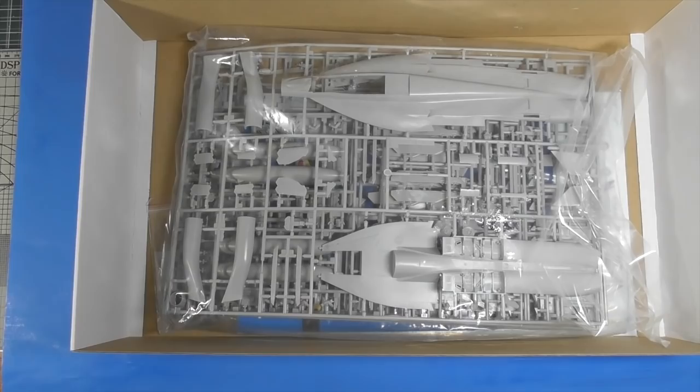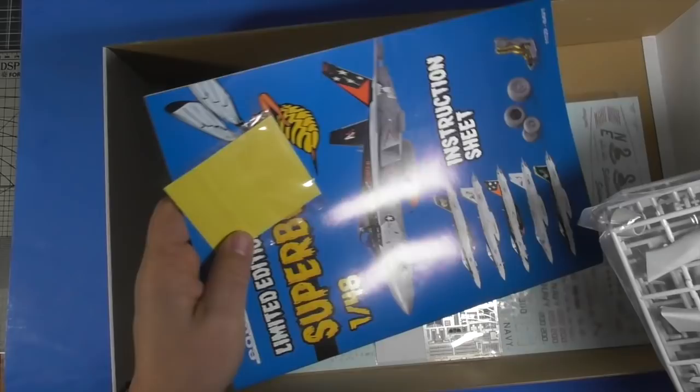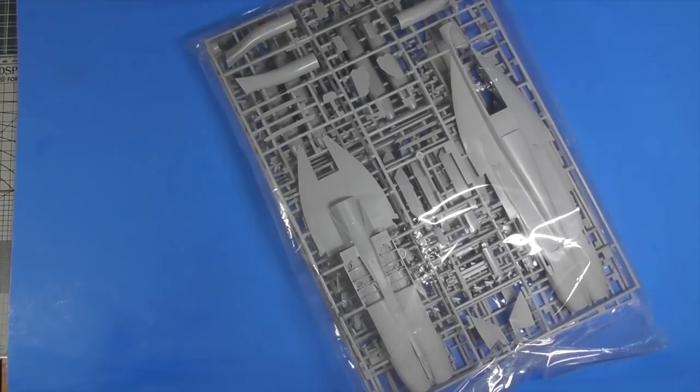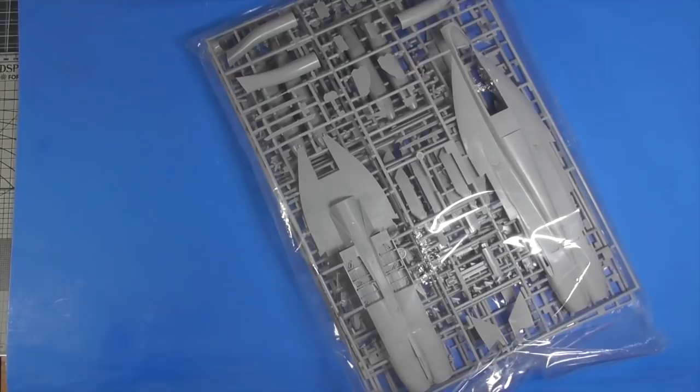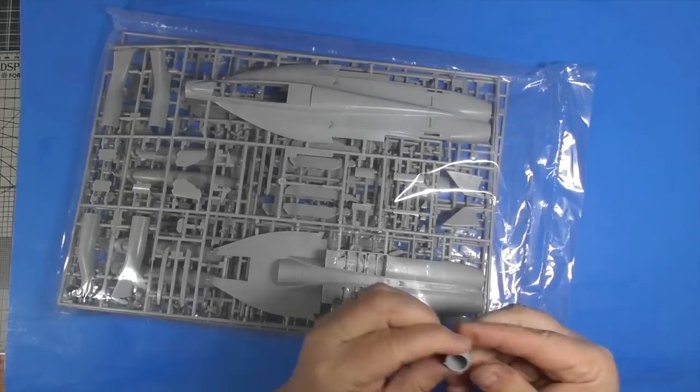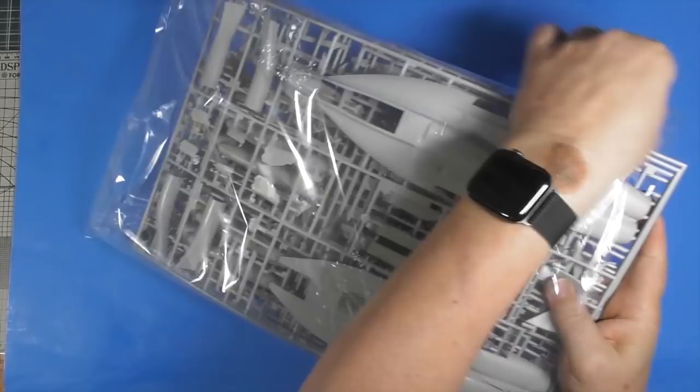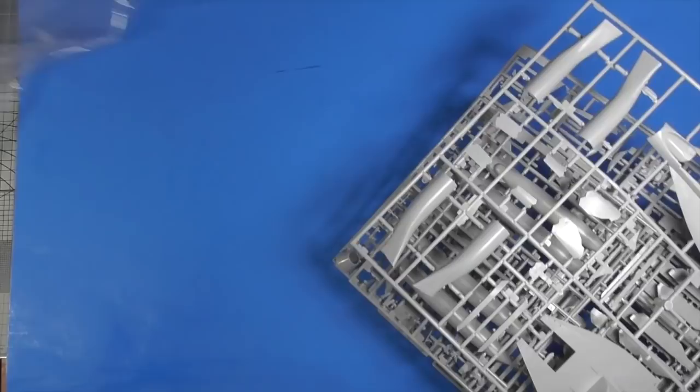Definitely not overstuffed. Clear parts, one bag of sprues, Brassin, mask, instructions, photo etch, and decals. Let's get it out of here. So we got us one bag. One loose part in the bag, looks like part of the jet nozzle. Keep the bag.